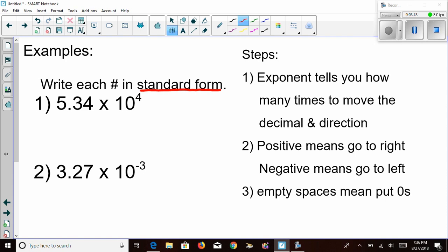Using those three steps, let's break down number one and see about rewriting it in standard form. First, let's look at the exponent. It's four, so I need to move four spaces. And that four is positive. That means I need to move it to the right.